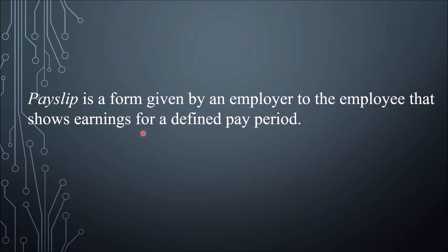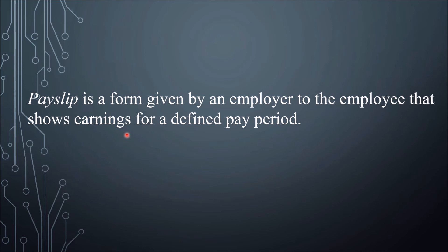A payslip is a form given by an employer to the employee that shows earnings for a defined pay period. It shows the gross pay and all deductions, including statutory deductions — those required by law — along with other voluntary deductions. After the deductions are applied, the net pay of the employee is shown. That is what we call a payslip.